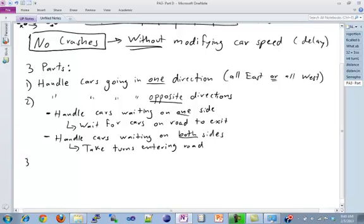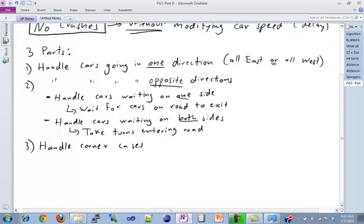And then finally, the third part is to handle corner cases. There are a lot of corner cases to this assignment. Now you might be wondering how you control how the cars go in one direction or have cars waiting on the other side. You control all this with the delays. With the single side it's easy. You just make them all go east and then make the one at the front with the smallest delay enter first, and make that really slow and make the ones behind that really fast. That's pretty straightforward.